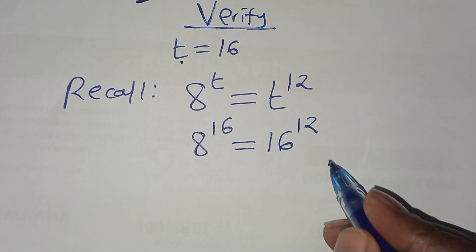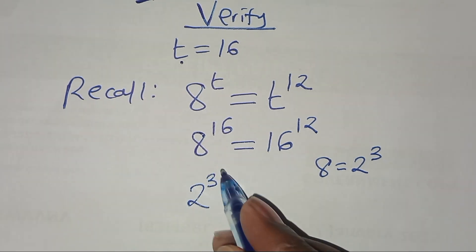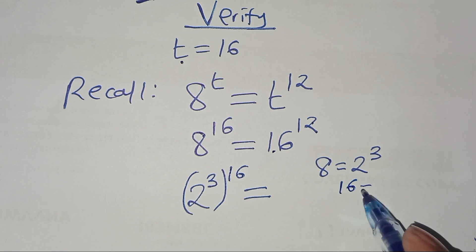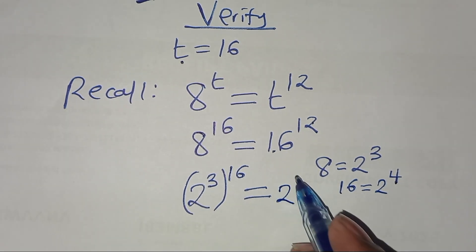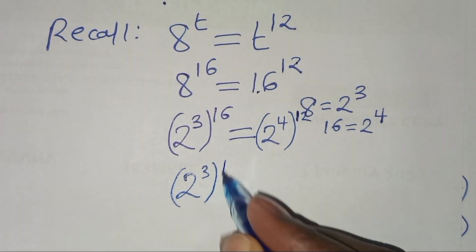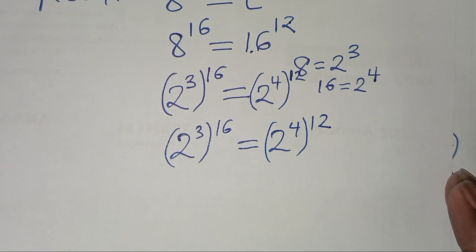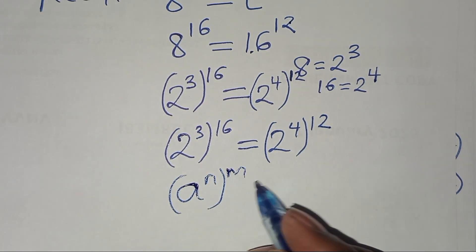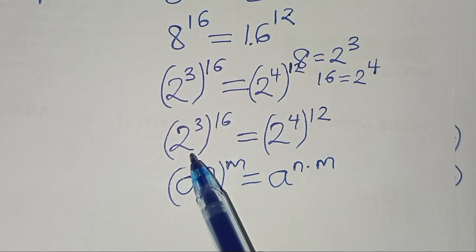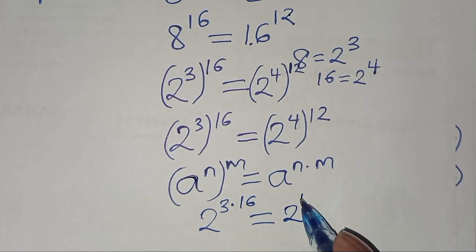We can express 8 as 2 to the power 3. Substituting, this is 2 to the power 3, raised to the power 16, and this equals 16 to the power 12. We can also express 16 as 2 to the power 4, giving us 2 to the power 4, raised to the power 12. So we have 2 to the power 3 raised to the power 16, equal to 2 to the power 4 raised to the power 12.